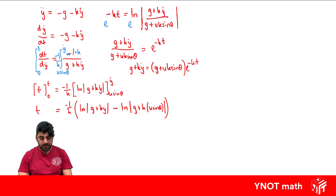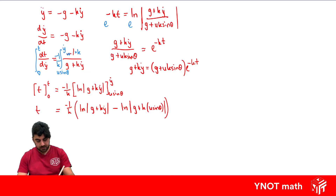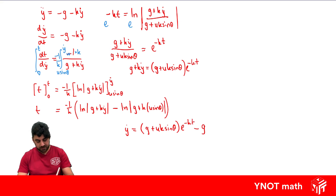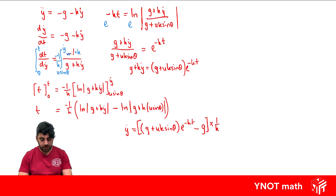We then minus g from both sides and divide by k. Our final expression for the velocity in the y direction is y-dot equals (1/k) times [(g + uk sin theta) e to the minus kt minus g].